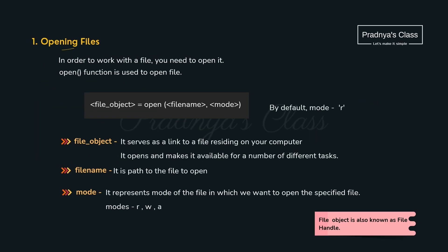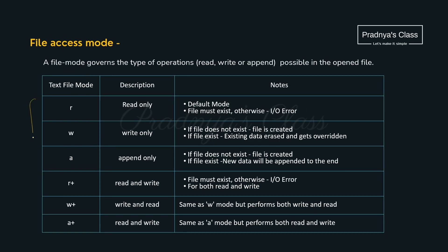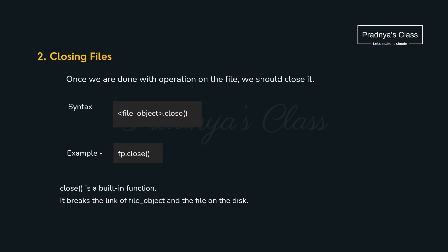Opening a file means creating the file object for a specific purpose. For that we use the open() function. The first parameter is the file name, and the second parameter is the mode, which decides for what purpose you are opening that file — for reading, writing, or to append data. The default mode is read mode. We will concentrate on three main modes: R for reading, W for writing, and A for appending.